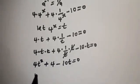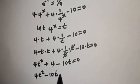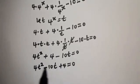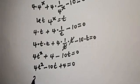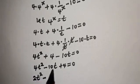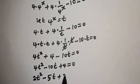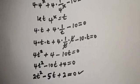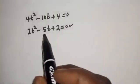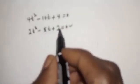This gives us 4t squared plus 4 minus 10t is equal to 0. Rearranging: 4t squared minus 10t plus 4 is equal to 0. We can reduce this — dividing through by 2: 2t squared minus 5t plus 2 is equal to 0. This is a quadratic equation which can be solved using either the factorization method or the quadratic formula. In this case we will use the factorization method.